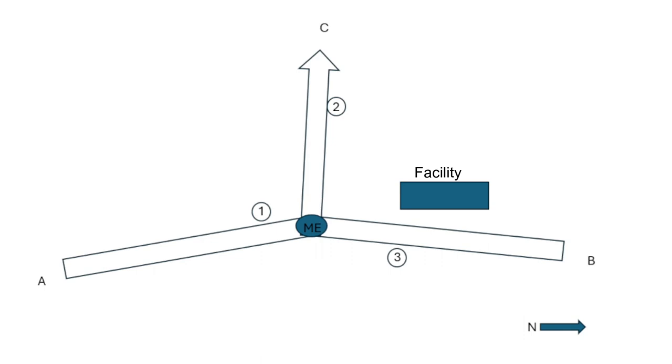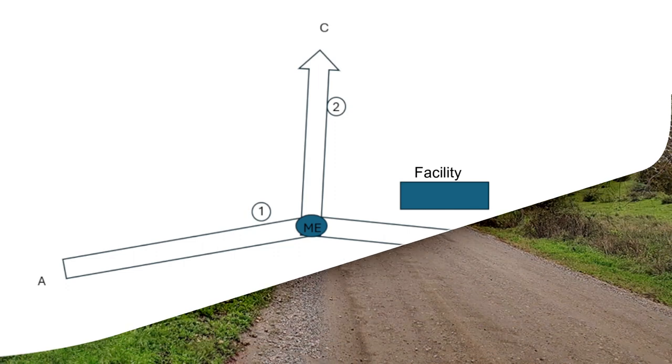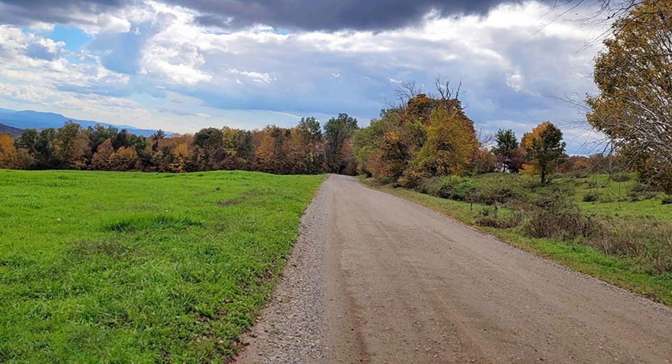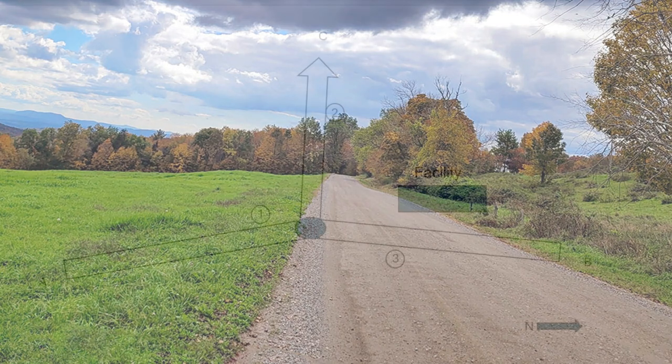Road A to B runs from south to north, and all three roads are unimproved roads, aggregate, silt and soil basically. Now A to B is somewhat flat, somewhat of a flat terrain.